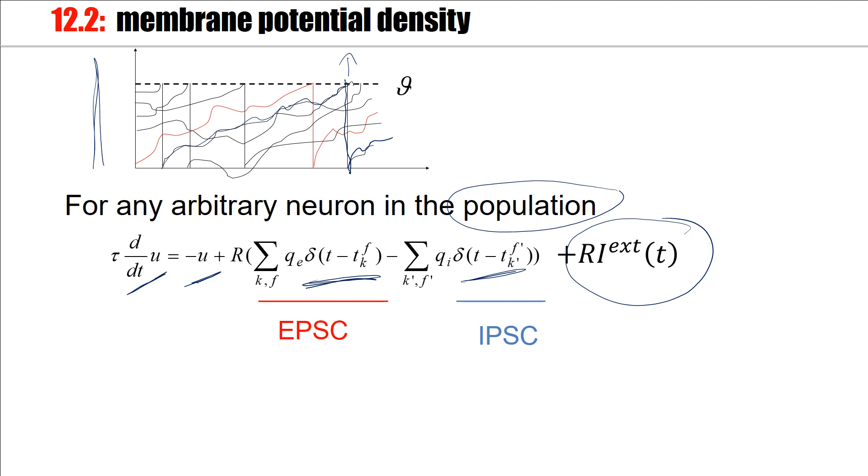And now the question is, instead of looking at each neuron individually, can we describe the distribution of membrane potentials, called the membrane potential density?